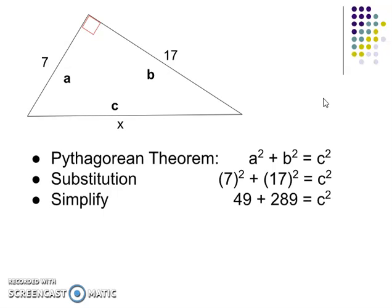I'll simplify there. 7 squared is 49. 17 squared is 289. Just use your calculator there. Then, of course, add those together. And at this point, I'll want to square root.